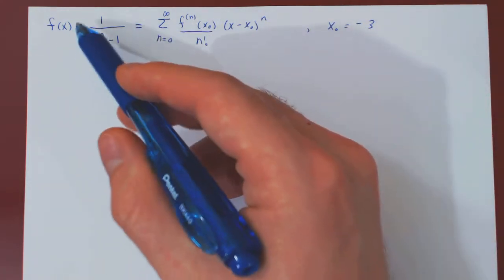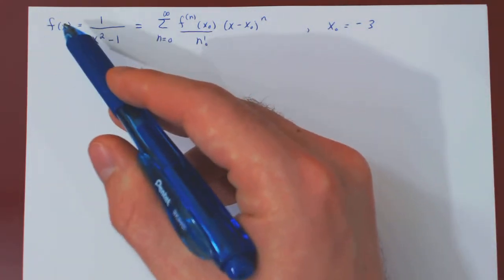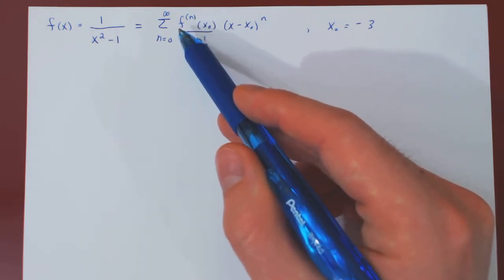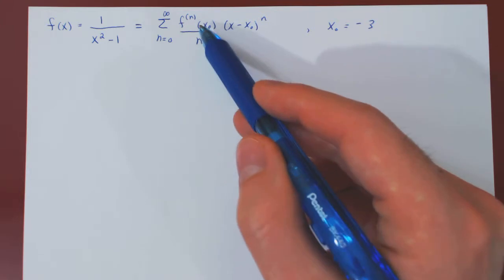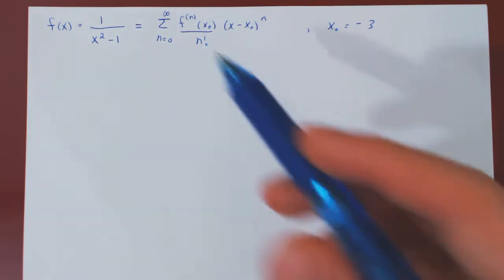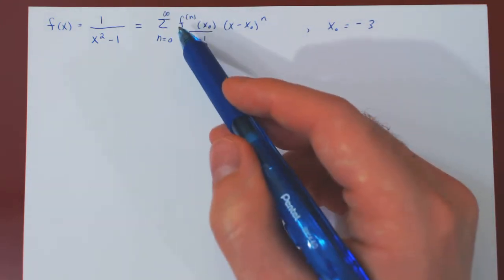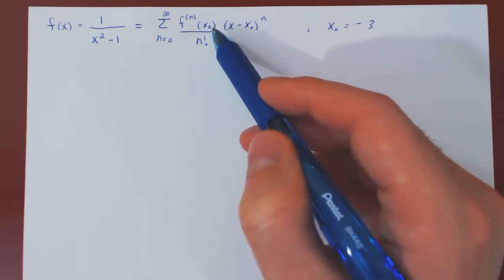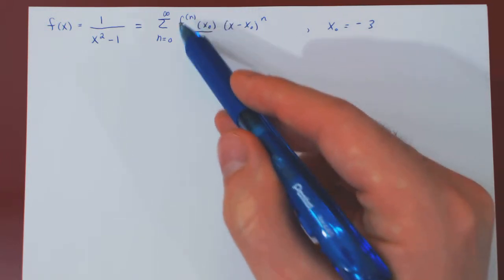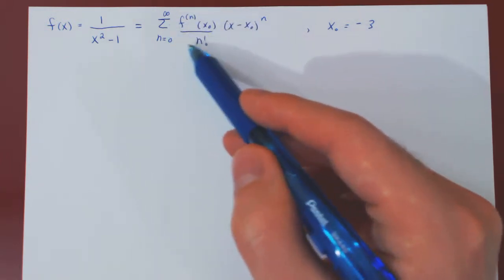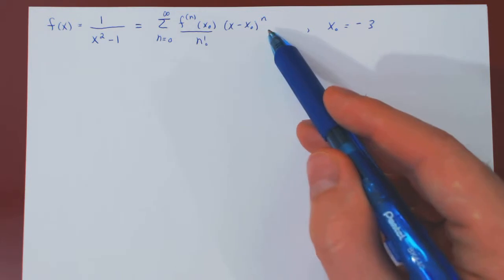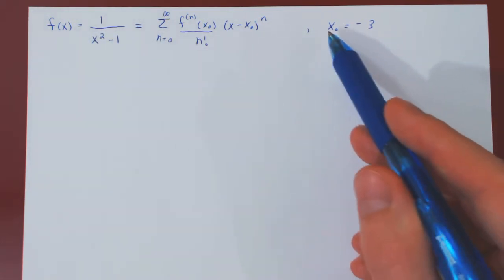We know we can try to find a Taylor series for a function by finding higher derivatives, evaluating those higher derivatives at the center of the expansion, then hopefully seeing a pattern, so we can replace the n-th derivative of the function at the center by a general formula of n, therefore having an explicit formula for the coefficients of the Taylor series centered at x0.